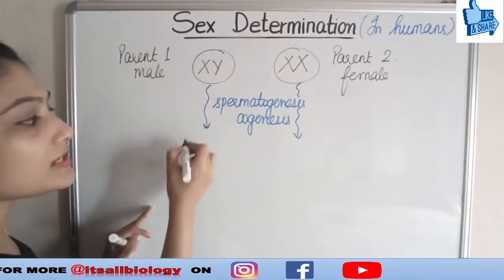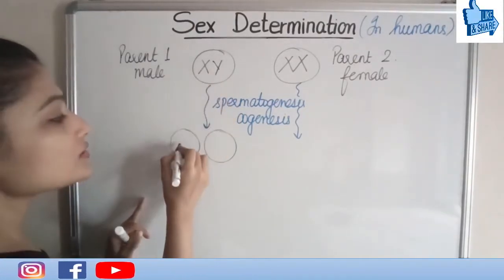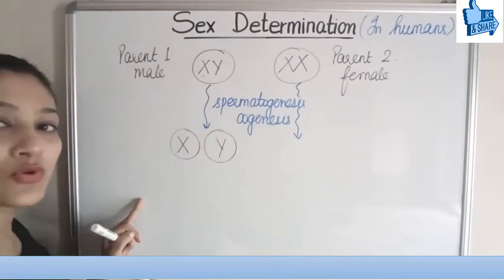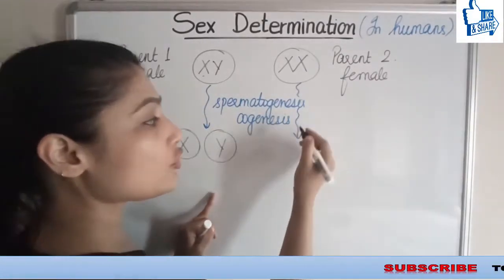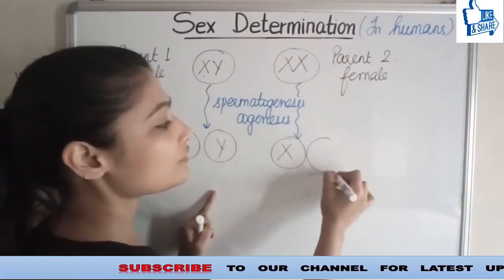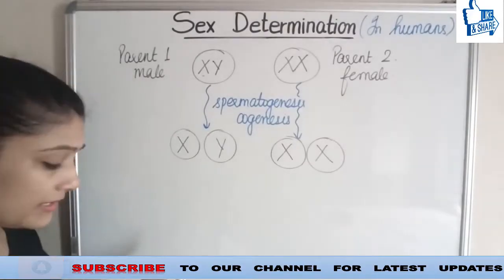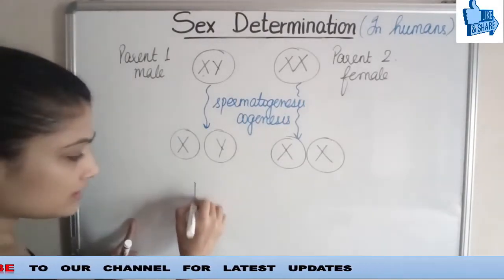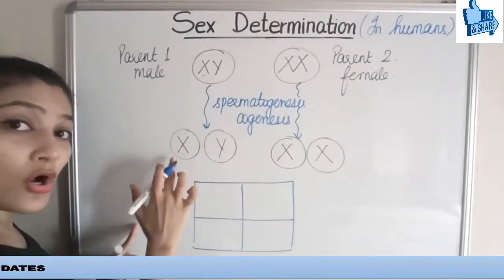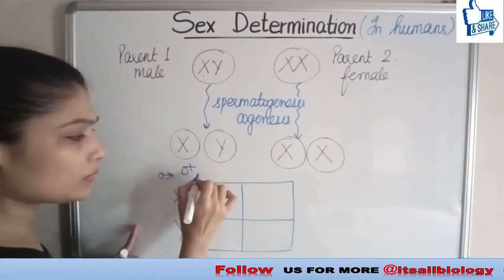Now suppose if the male is forming sperms — these are the male gametes. One sperm will be having chromosome X and one sperm will be having chromosome Y. Similarly, if I talk about the female, one of the eggs will be having chromosome X and one will be having again X. Now let me solve it using a Punnett square. We already know what a Punnett square is, so I will just quickly draw it here, writing the male gametes on one side and the female ones on the other.